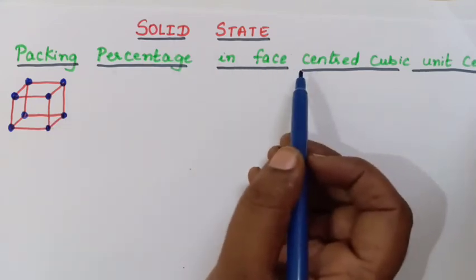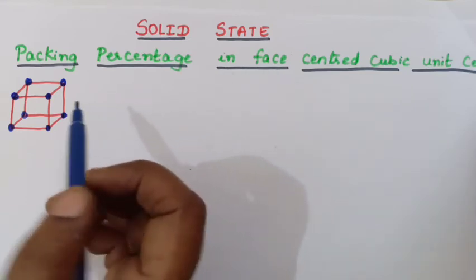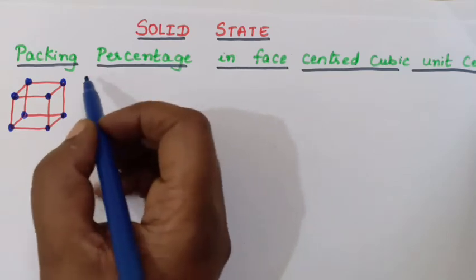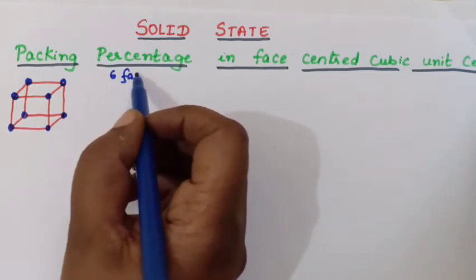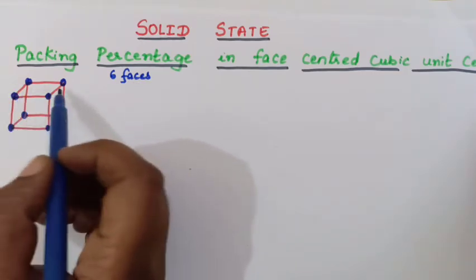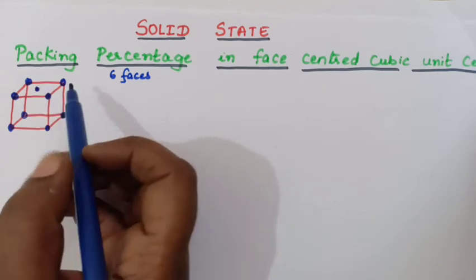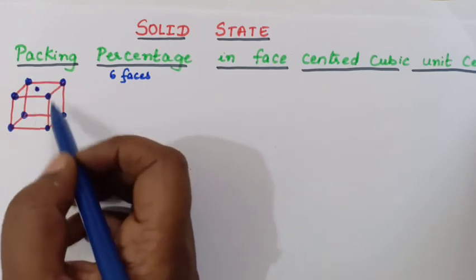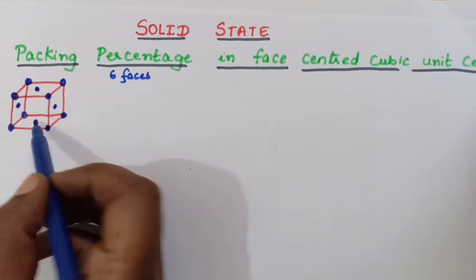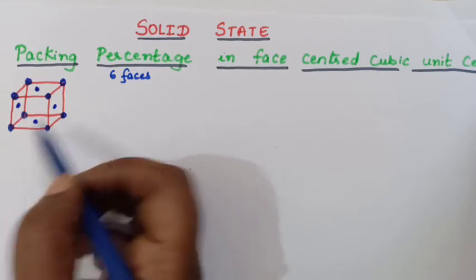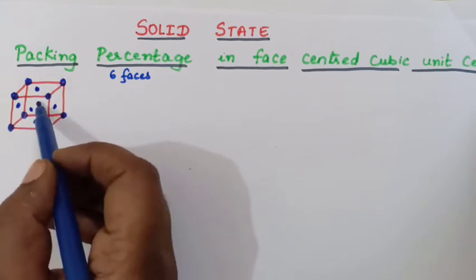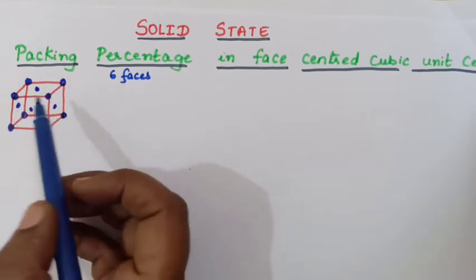In face centered cubic unit cell, even in the face particles will be present. So this is the top face. In a unit cell, how many faces will be there? Totally 6 faces will be present in the FCC unit cell. So 1 at the top, 1 in this face, 1 in this face, 1 down this face, then front 1 and back side 1.